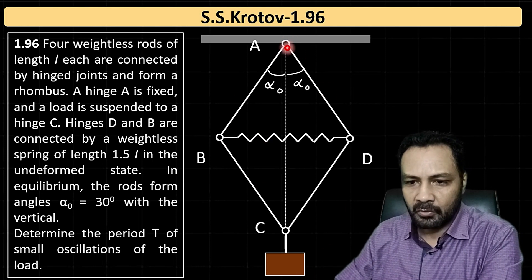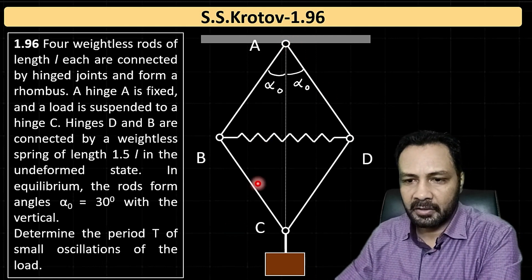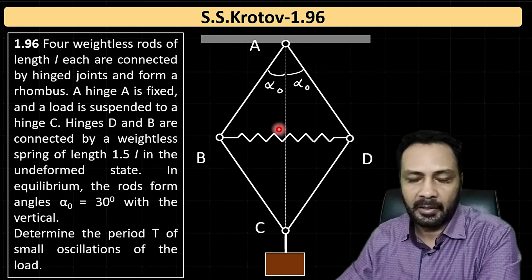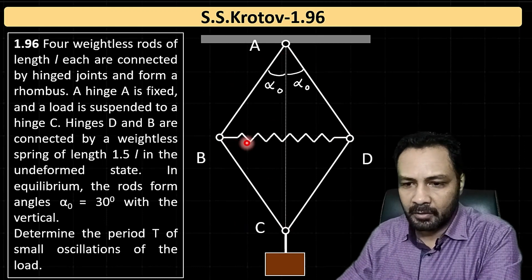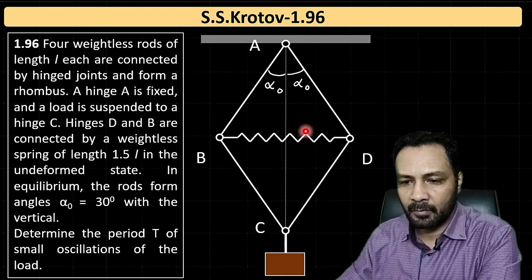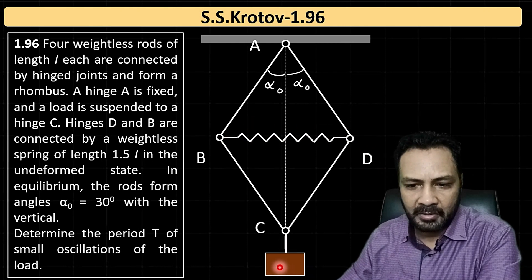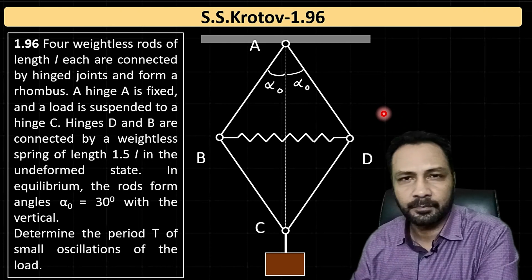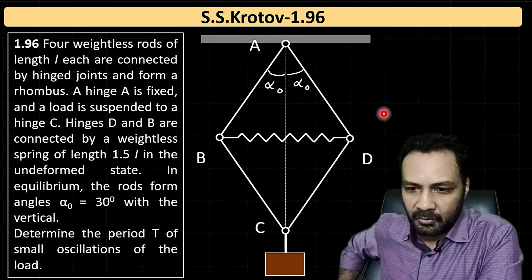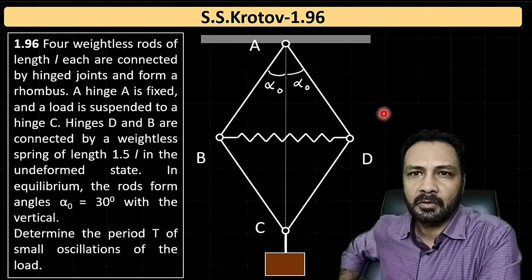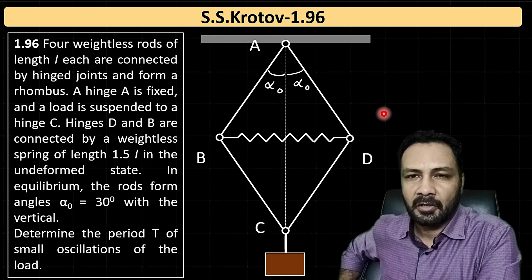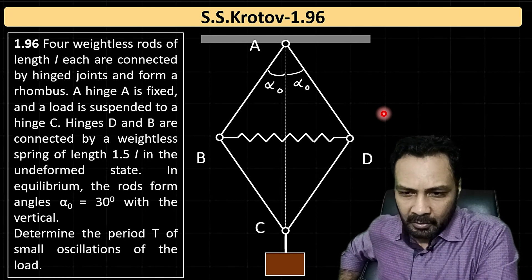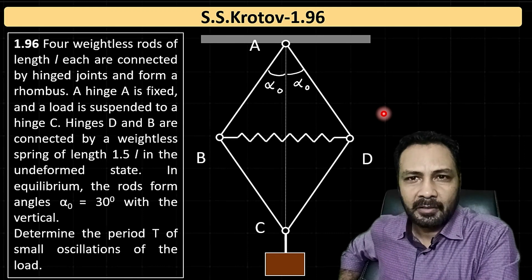So we have four rods connected by hinges forming a rhombus, each of length L. There is a massless spring between B and D with natural length 1.5L, and a mass hanging below. Neither the spring constant nor the mass is given explicitly. We need to find the time period of oscillation after disturbing the system from its equilibrium position.